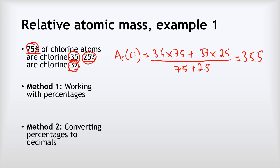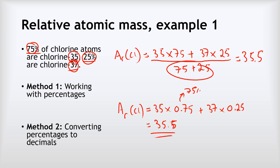Alternatively, if you're confident with your percentages and decimals, you can just convert your percentages straight to decimals and do it this way instead. The relative atomic mass for chlorine equals 35, that's the mass of our first isotope, multiplied by 0.75, because that is 75% as a decimal. Then we're going to add 37, that's the mass for our second isotope, multiplied by 0.25, because that is 25% as a decimal. If we do that, we come to 35.5 as well. This just means we don't have to do that division step there, because we've already done it by converting our decimals.